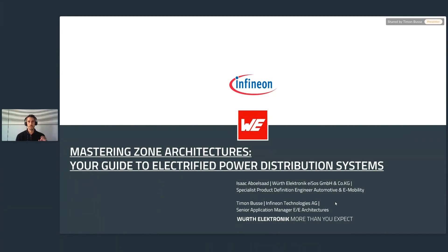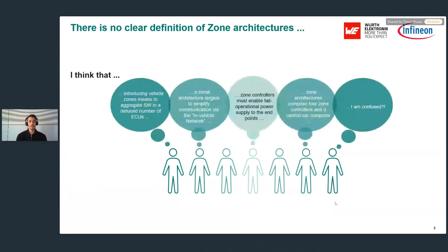In order to understand how to be successful in power distribution systems, the basics are to understand how the migration towards zone architectures is functioning. I'm starting by trying to identify a definition for zone architectures, which is a very difficult task. Depending on who you ask, the definition will be vastly different. A software engineer might say zone architectures is about aggregating software and reducing the number of ECUs, while a communication expert might say it's about standardizing communication protocols through the in-vehicle network. There is no one-fits-all definition, and each view is true for the individual OEMs pursuing it.